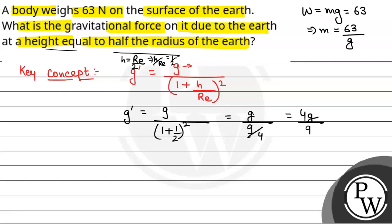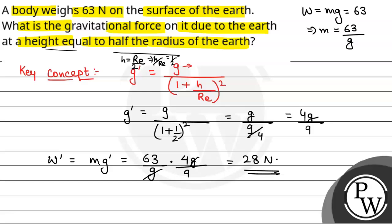g' is equal to 4g by 9. Now, the weight of the body at height h will be W' = m × g', that is (63 by g) multiplied by (4g by 9). This gives 28 Newton. So this will be the gravitational force due to earth on the body at a height h equal to half the radius of earth.